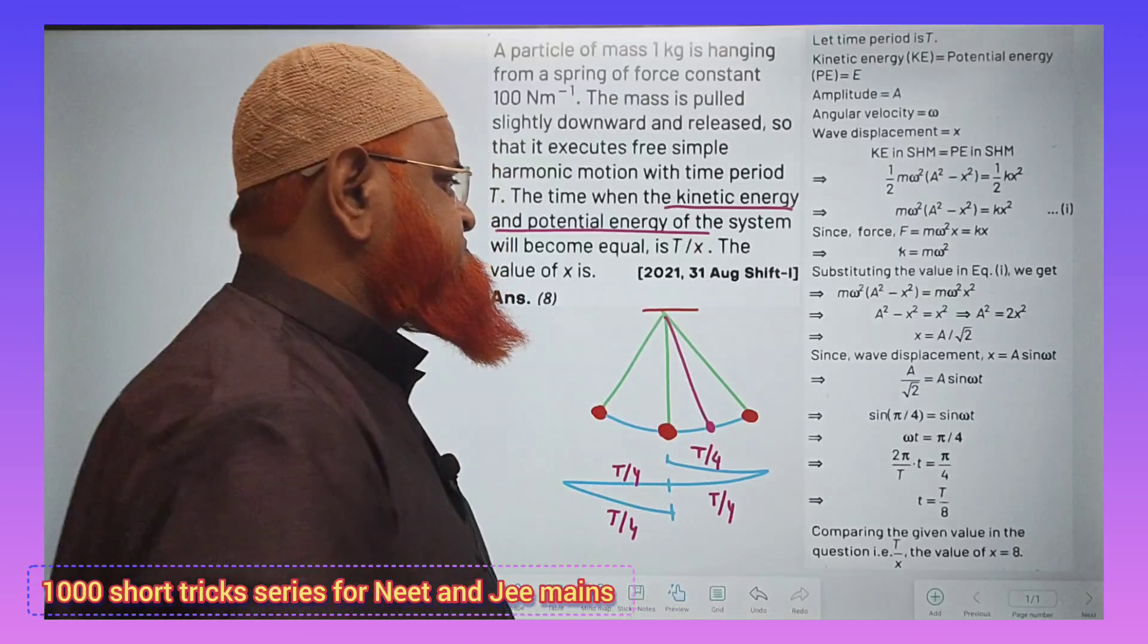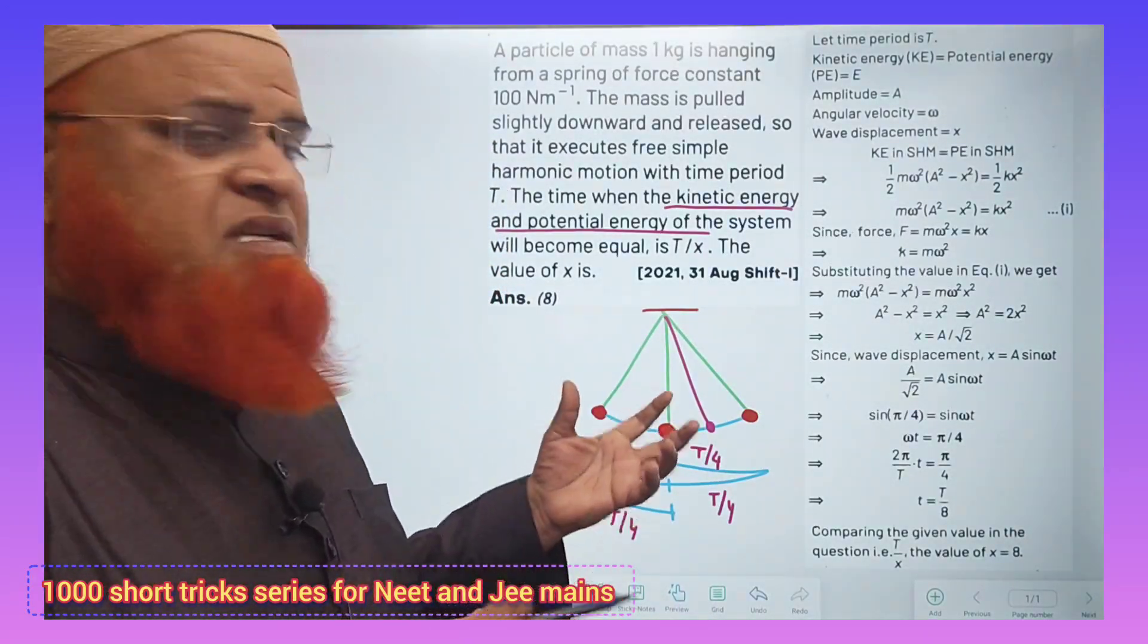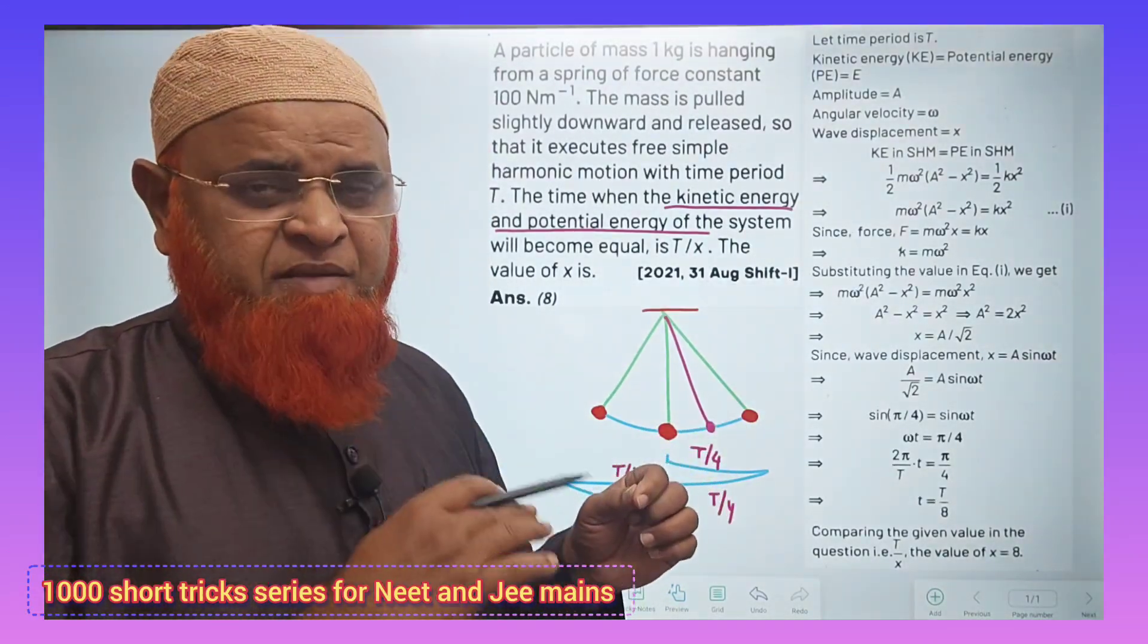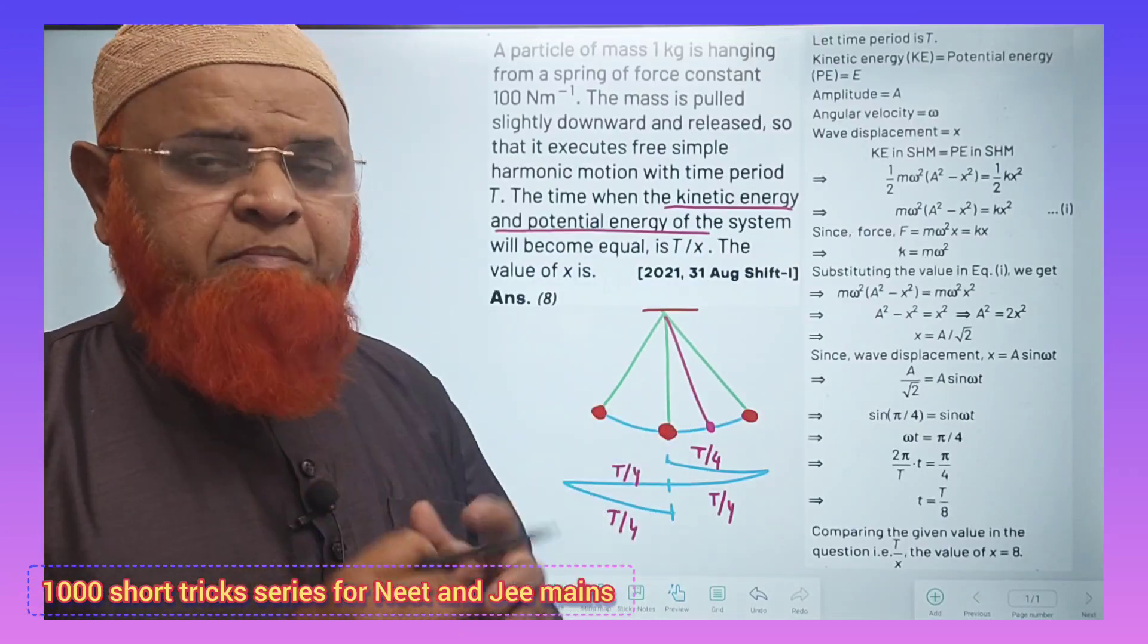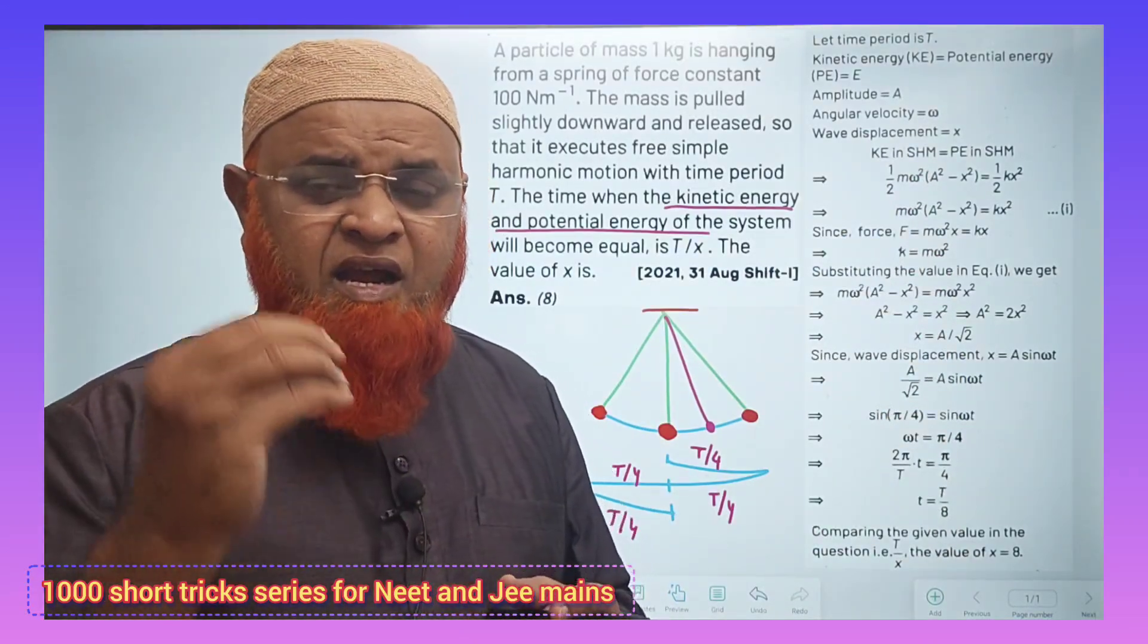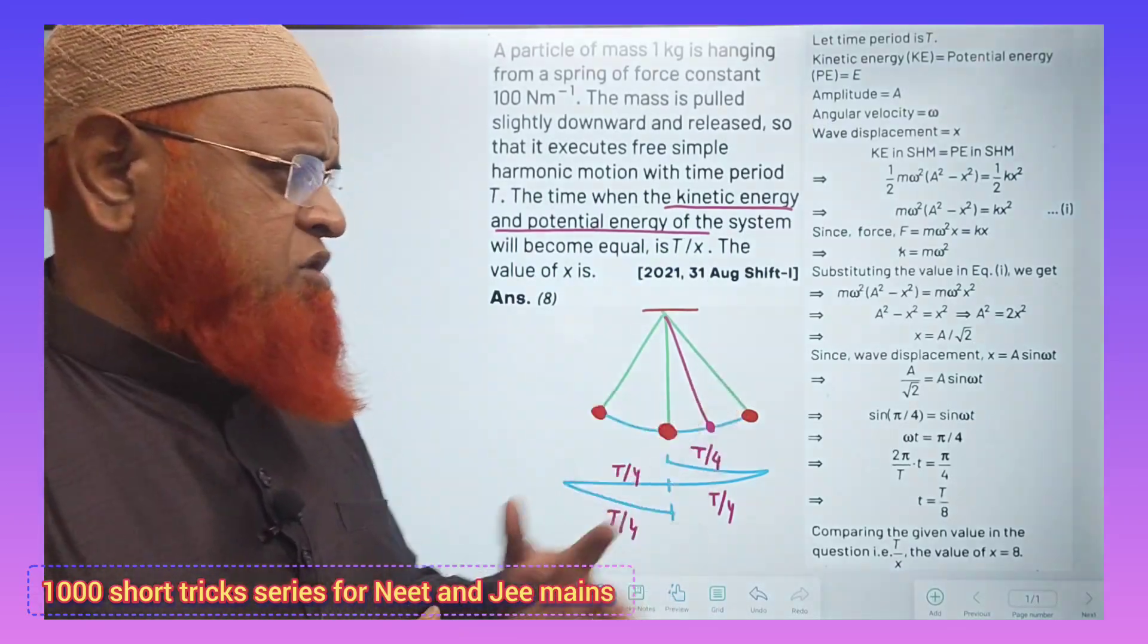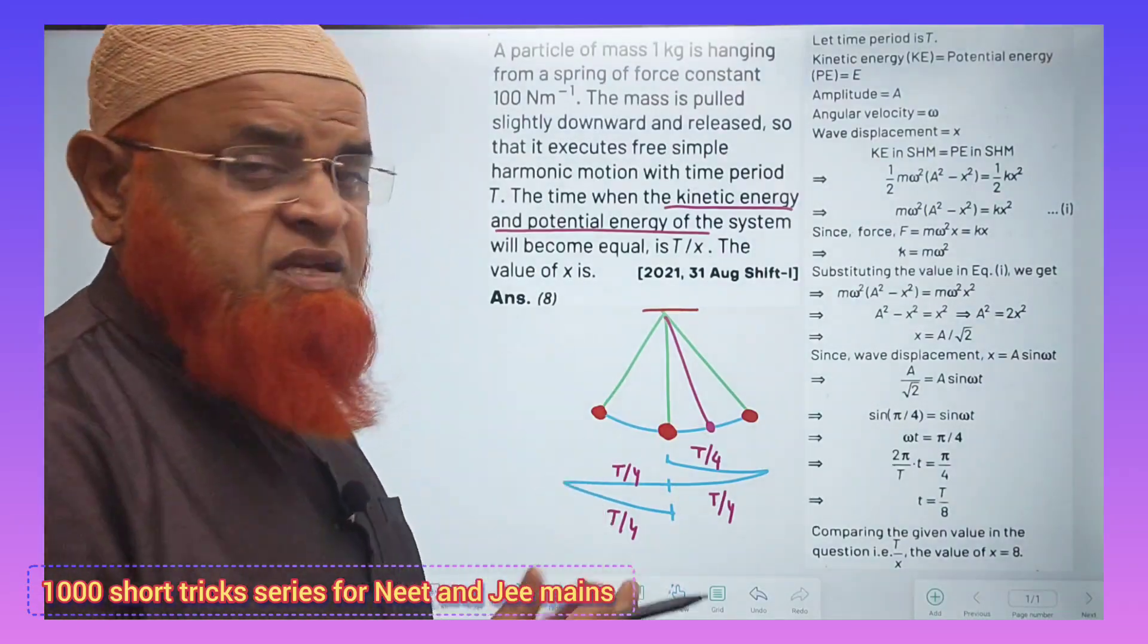somewhere here kinetic energy is equal to potential energy. He's asking us to find out the time from the mean position - after how much time will potential energy and kinetic energy be the same? For this, there is a lengthy method given in the books. Let us bypass this method and do the problem without pen and paper. You all know that in a